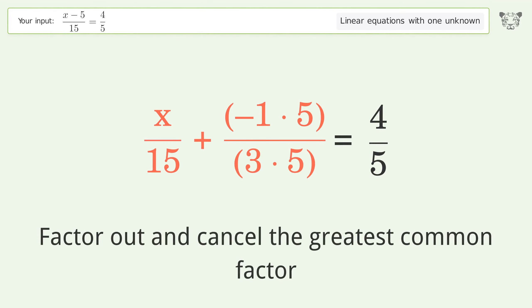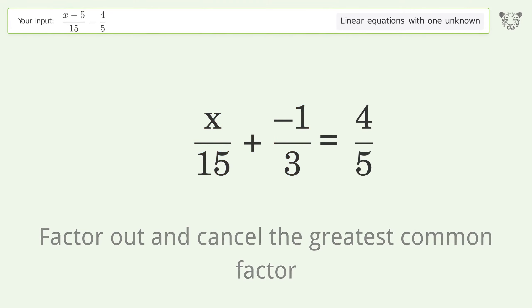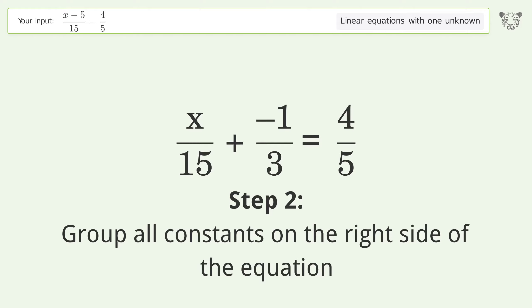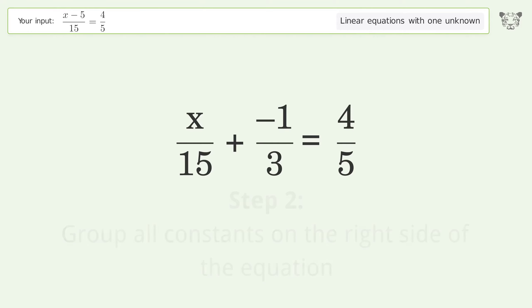Factor out and cancel the greatest common factor. Group all constants on the right side of the equation. Add 1 over 3 to both sides.